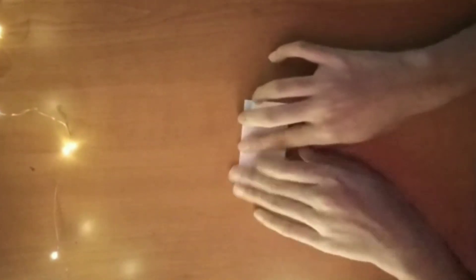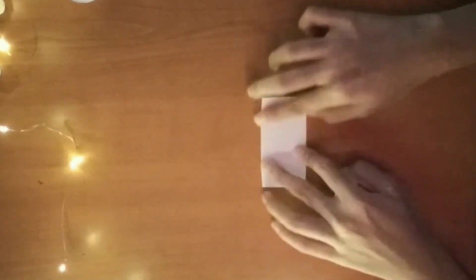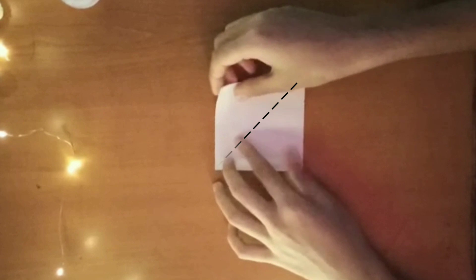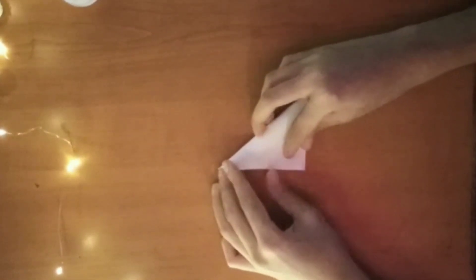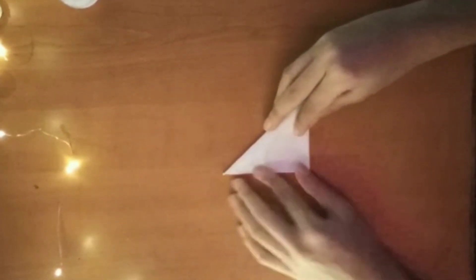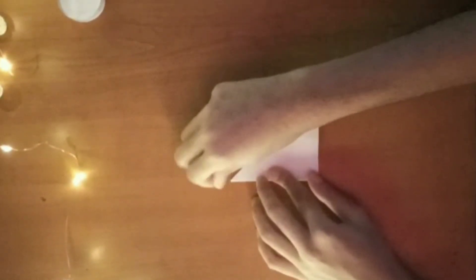First we're going to start by folding the square into half and then half again to get a cross. Let me fold diagonally. Now bring the corners of the square to the center.